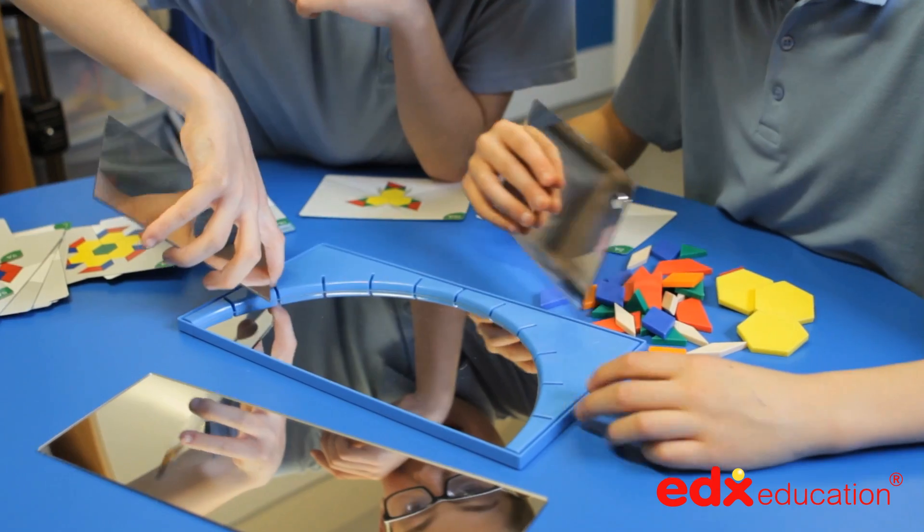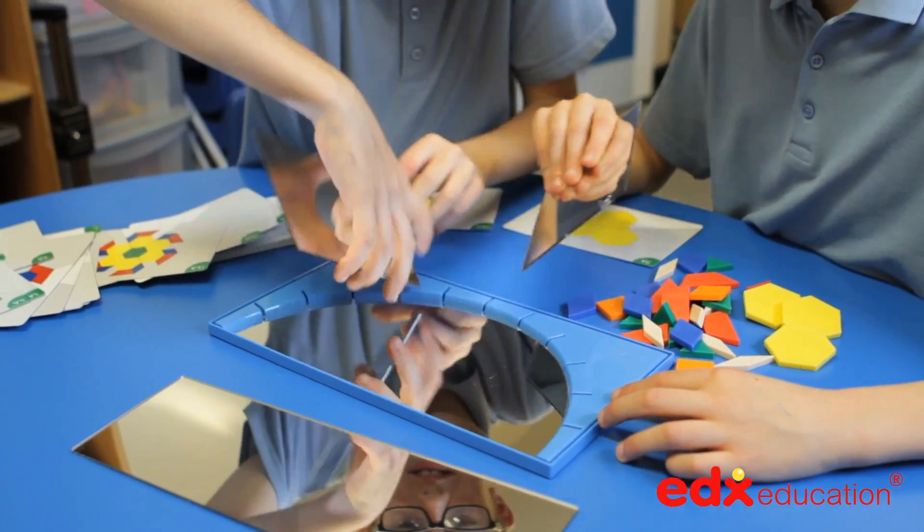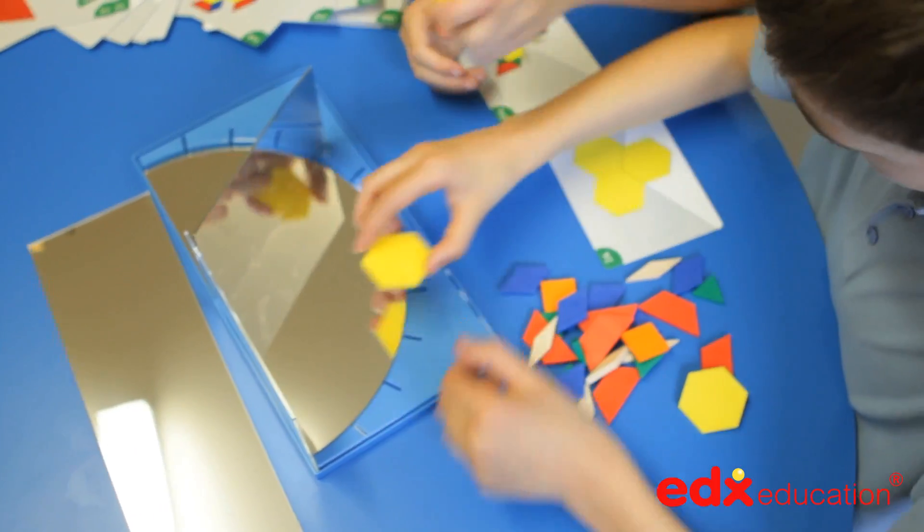It comes with a moulded base with grooves in it to hold four plastic mirrors in place at a variety of precise angles.